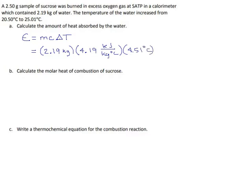And if we multiply all that out, 2.19 times 4.19 times 4.51, we get 41.384211. And if our kilograms canceled and our degrees canceled, then yeah, this value should come out in kilojoules. So that's the energy absorbed by the water.